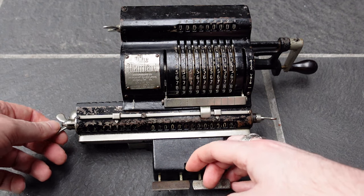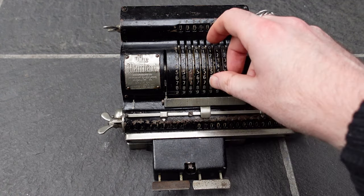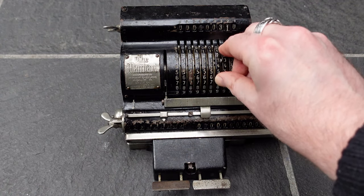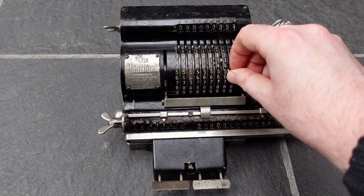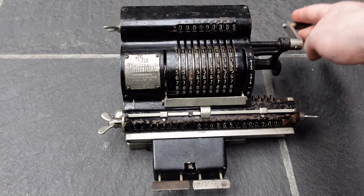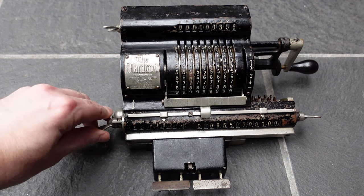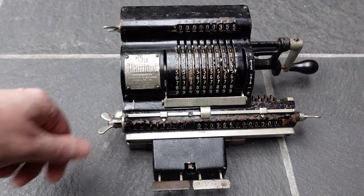I have other videos in which I explain how to do calculations on a pinwheel machine, but for completeness sake I'll just show a division of 355 by 113, which is a nice approximation to pi.